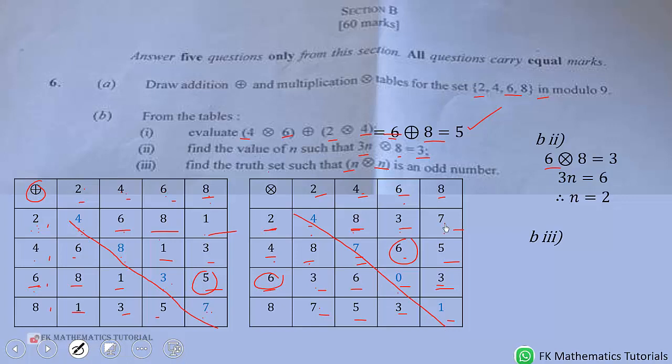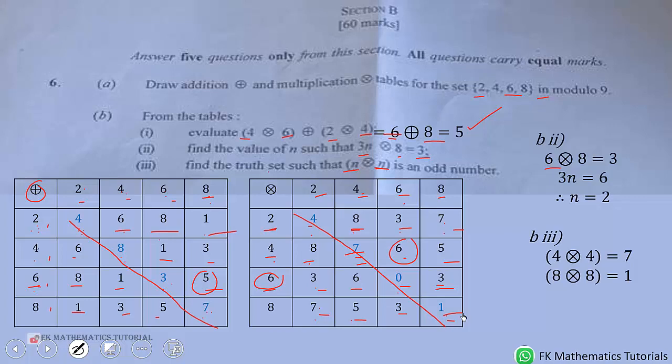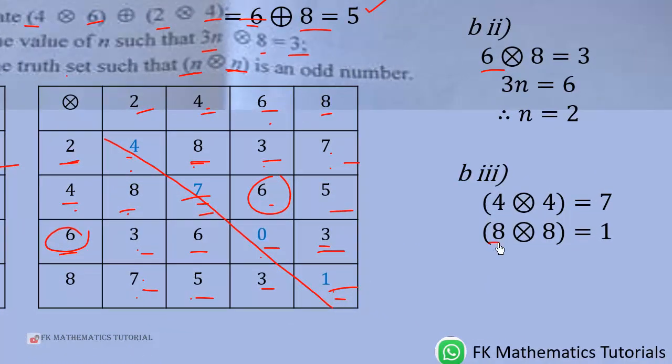So these odd numbers, these ones. The number that is multiplying to give us this result, you see N by N must be the same. So 4 by 4 will give us an odd number. Then 8 by 8 will also give us an odd number. Therefore, N is either equal to 4 or N is equal to 8.